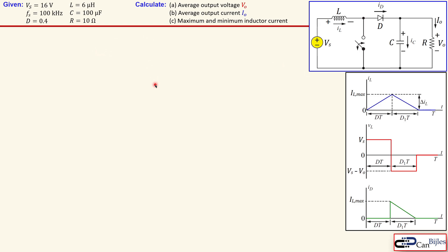Since this will be DCM — discontinuous current mode — I will prove that shortly. The waveform will be different than in the continuous current mode. For the inductor current, there will be a waveform that goes to a maximum and then comes back to zero level, so it will not stay above zero. That is definitely a situation where you have discontinuous current mode. For the inductor voltage, it will have a corresponding shape and will also be zero during the interval where the current is zero.